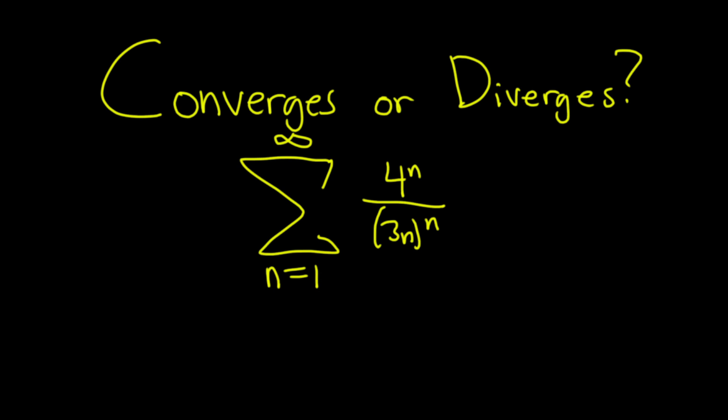Hello, in this video we're going to do an interesting math problem. We have an infinite sum from n=1 to infinity of 4^n over (3n)^n. The question is to determine if it converges or diverges.